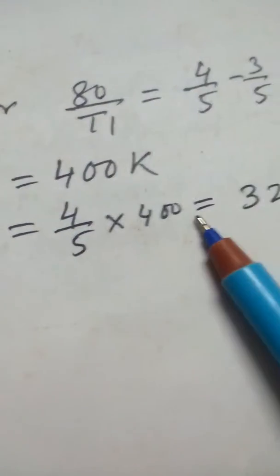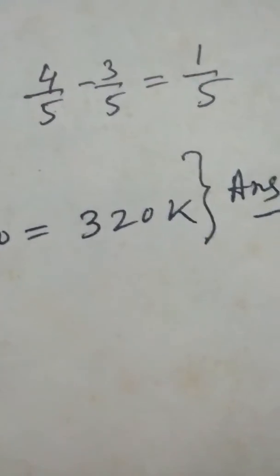From here, you will get T1 directly. So, T1 = 400. And similarly, T2 will be equal to 4/5 × 400 = 320 Kelvin. This is the answer. Okay?